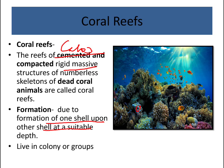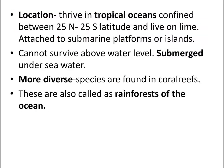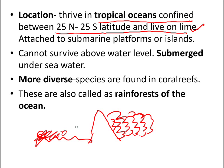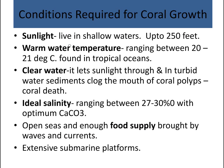Corals live in groups or colonies, and they are mainly located in tropical oceans, between 25 degrees north and 25 degrees south latitude. They can attach to limestone substrates or submarine platforms and grow easily. Coral reefs host diverse species and are also called the rainforests of the oceans.